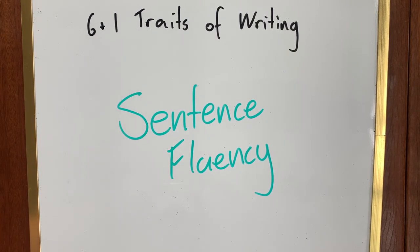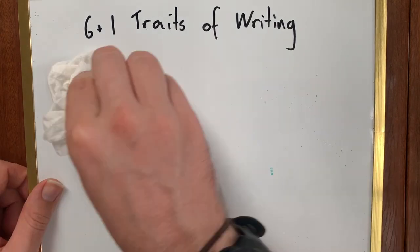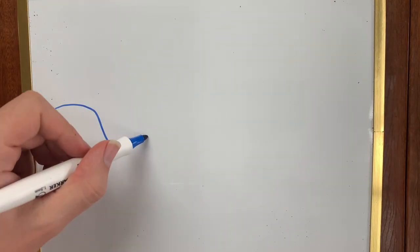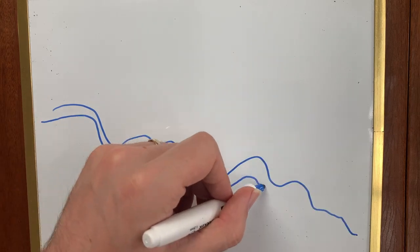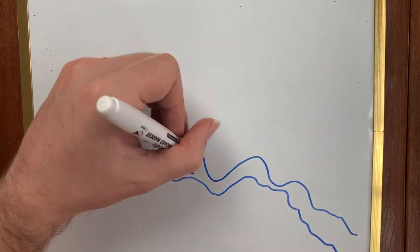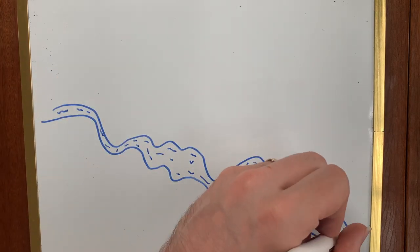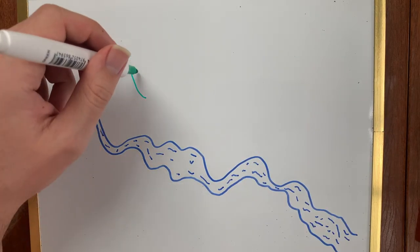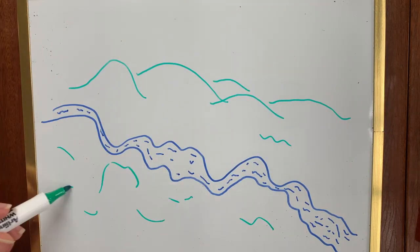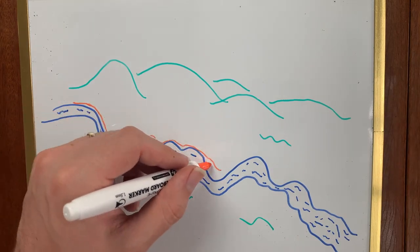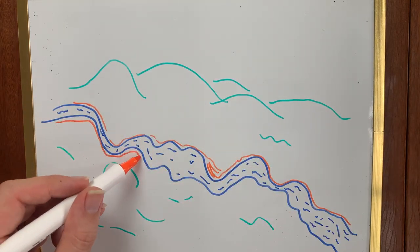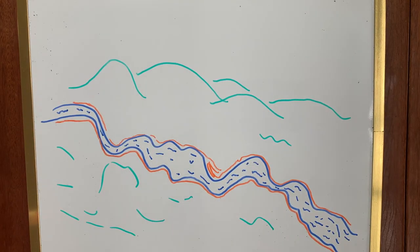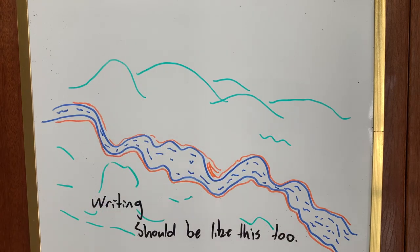Writing should be a little bit like a river. It's not the same the whole way — it changes, it twists and turns. In some points it's deeper than others; in other places it's faster or slower. It keeps moving and it's interesting. Our writing should be like this too.